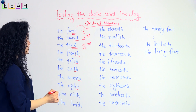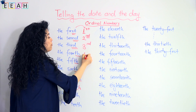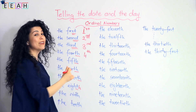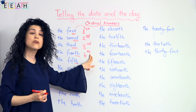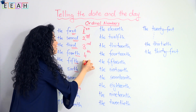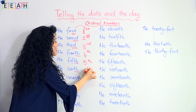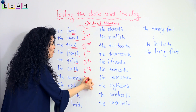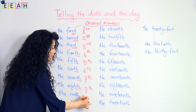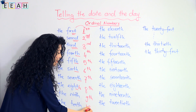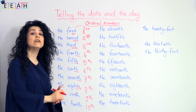From number four onward we add 'th': the fourth, the fifth, the sixth, the seventh, the eighth, the ninth, and the tenth. For example, today is the tenth of May.